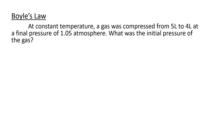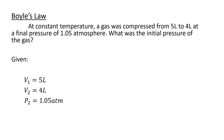Let us solve a problem involving Boyle's Law. At constant temperature, a gas was compressed from 5L to 4L at a final pressure of 1.05 atm. What was the initial pressure of the gas? Our given: V1 = 5L, V2 = 4L, and P2 = 1.05 atm. Since the volume decreased, the pressure increased, so P2 should be greater than P1.